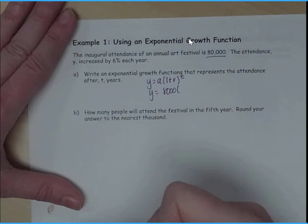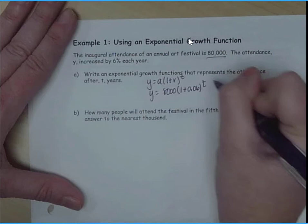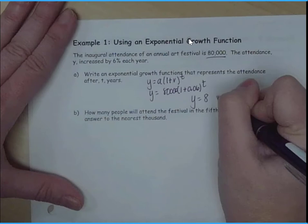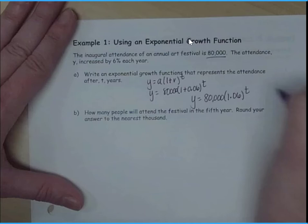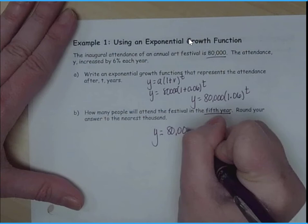So if I want to know how much will be in the fifth year, I'm going to replace 80,000 times 1 and 6 hundredths to the fifth power.